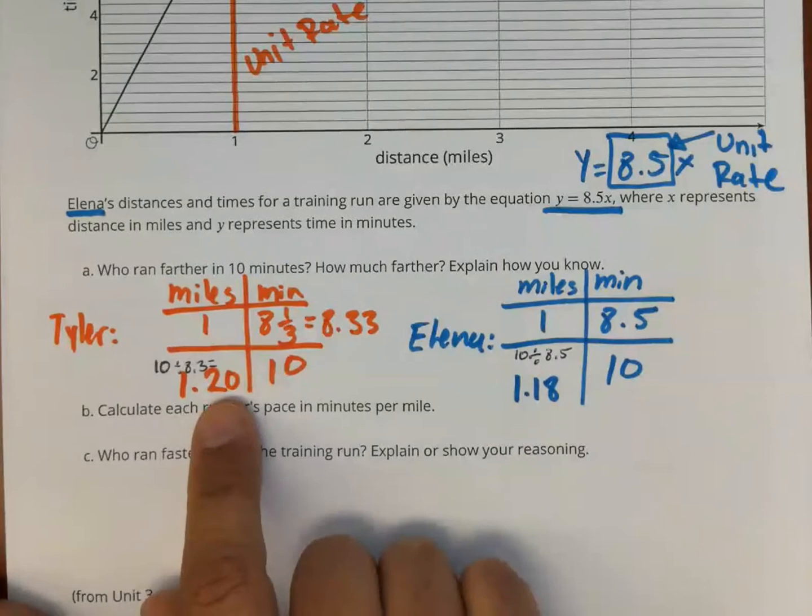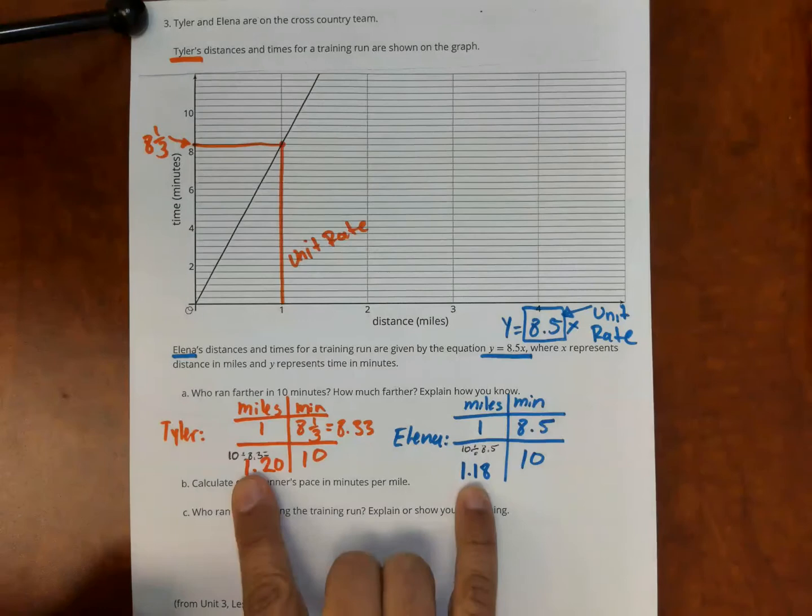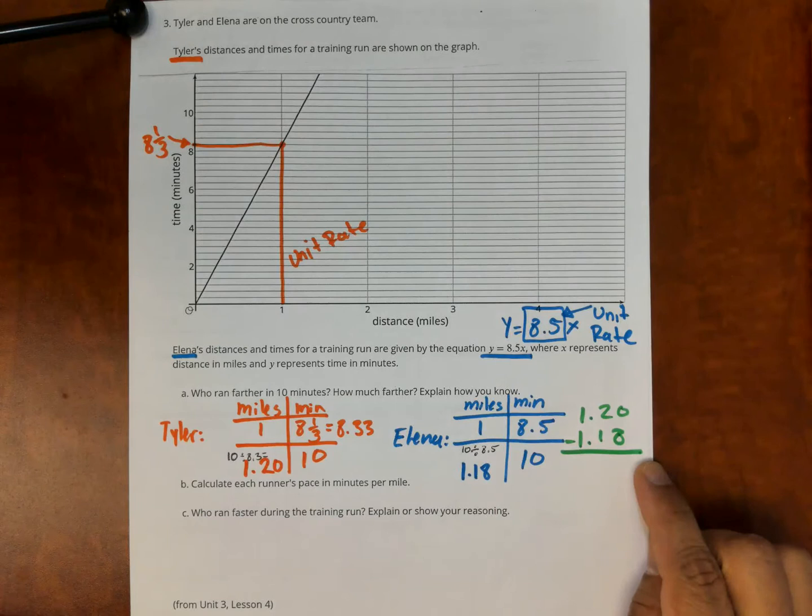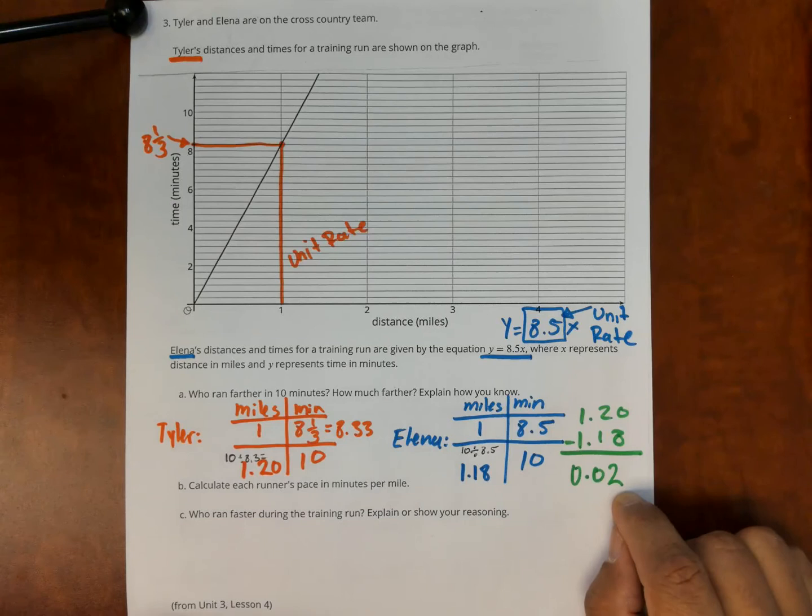How much further does Tyler run? I could just subtract these two numbers. I'm going to do this subtraction right here to see how much further Tyler runs than Elena and I get two hundredths. So Tyler runs two hundredths of a mile further than Elena.